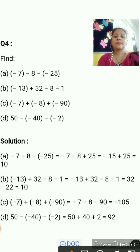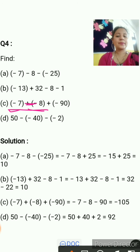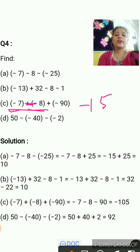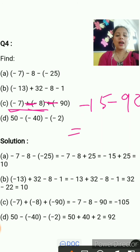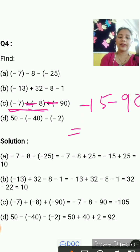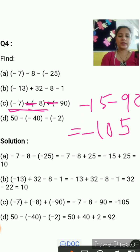Part C: minus 7 plus minus 8 minus minus minus 19. Plus minus gives minus: minus 7 minus 8. Minus minus is plus: 7 plus 8 equals 15, but it is negative 15. Then we have plus negative 90, giving negative 15 and negative 90. Negative plus negative is negative: 15 plus 90 equals 105, so the answer is negative 105.